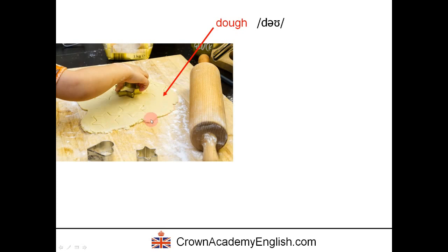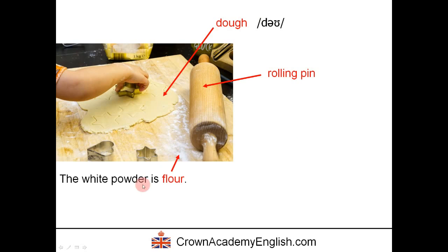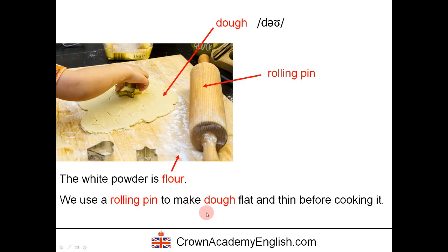This food is called dough — be careful of the pronunciation: dough. And this is a rolling pin. This white powder is called flour. We use a rolling pin to make dough flat and thin before cooking it. We make it flat and thin like this, and then put it in the oven and bake it. The young person is making perhaps some biscuits or cookies with the dough.